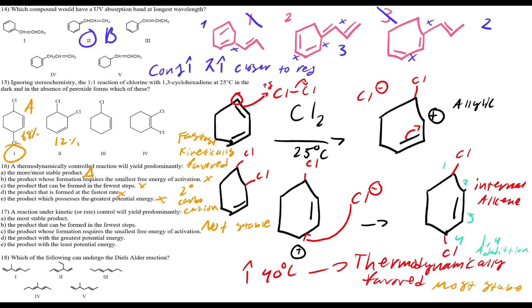Question 17: a reaction under kinetic control yields predominantly what? Not the most stable product (A is wrong). Not necessarily fewest steps (B is wrong). The product requiring the smallest free energy of activation — yes, because at -80°C we do the reaction with very low energy input. Answer C is correct. Kinetically favored = smallest activation energy.